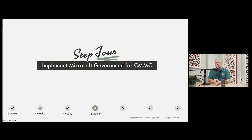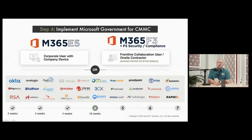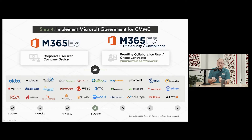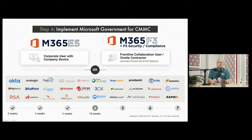Step 4 is implementing, and it's the longest process because we're going to do it right. Let's take a look at licensing. When talking about the Microsoft Government Cloud, a lot of small businesses want a one-stop shop — they want users to be compliant, security top of mind, and productivity and functionality as integrated as possible. That's where licensing for the GCC High really takes shape.